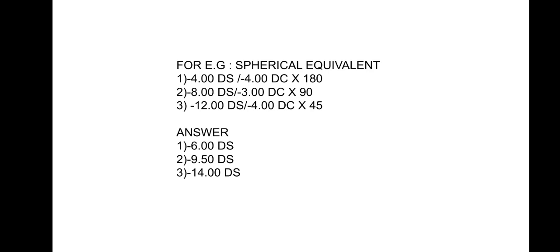For example, for a prescription of −4.00 DS / −4.00 DC × 180°, half the cylinder is 2, so −4 + (−2) = −6.00 DS. For −8.00 DS / −3.00 DC, half the cylinder is 1.5, giving −8 + (−1.5) = −9.50 DS.